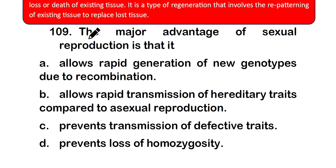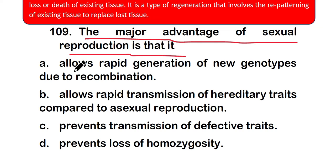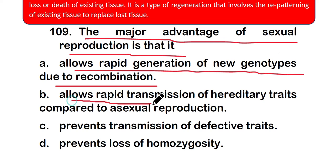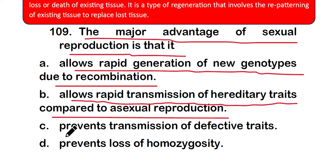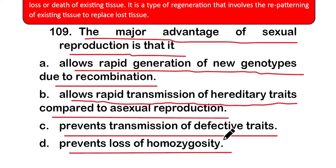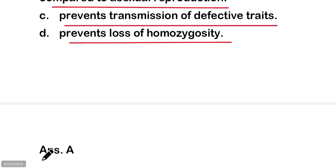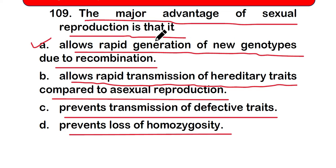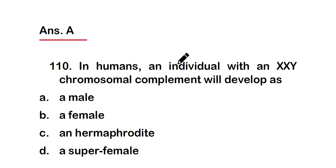Question 109: The major advantage of sexual reproduction is: (a) it allows rapid generation of new genotypes due to recombination, (b) it allows rapid transmission of hereditary traits compared to asexual reproduction, (c) it prevents transmission of defective traits, or (d) it prevents loss of homozygosity. The correct answer is option A — it allows rapid generation of new genotypes due to recombination.